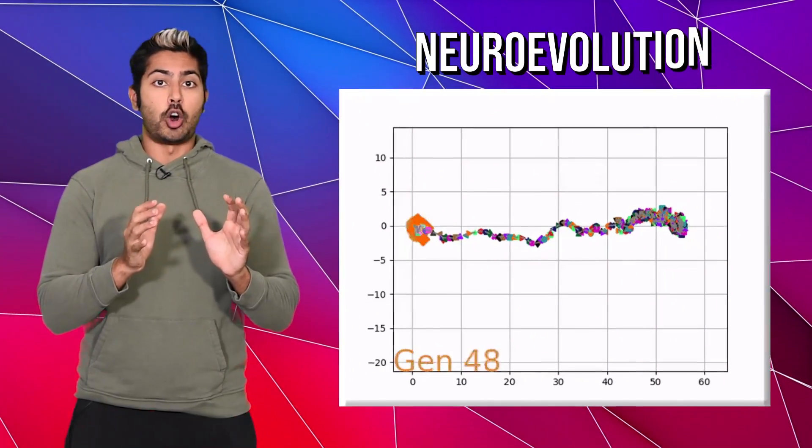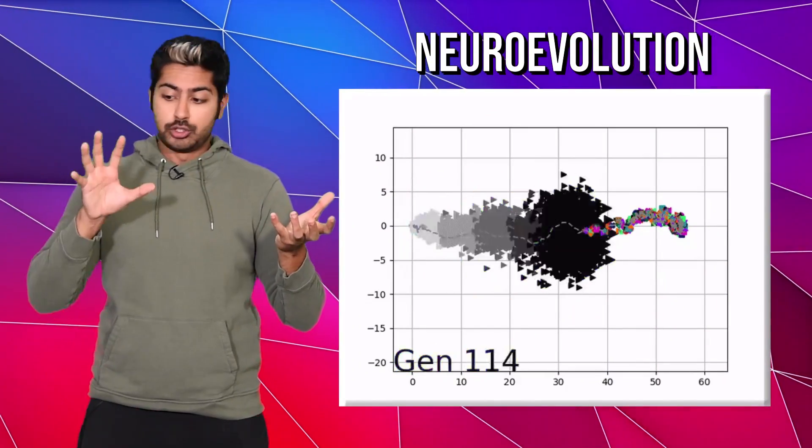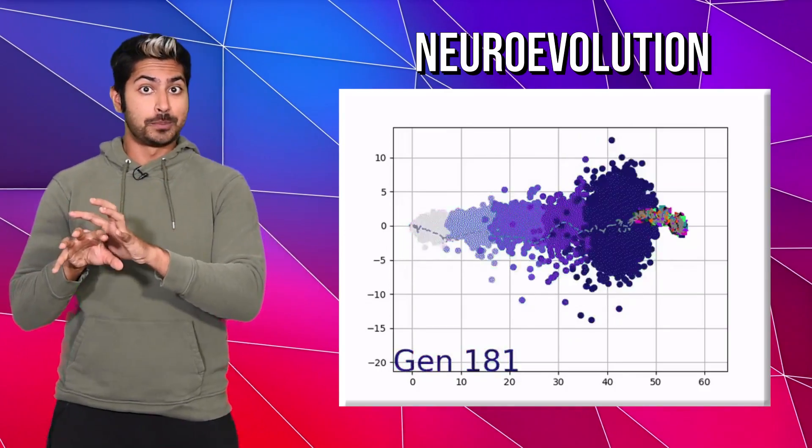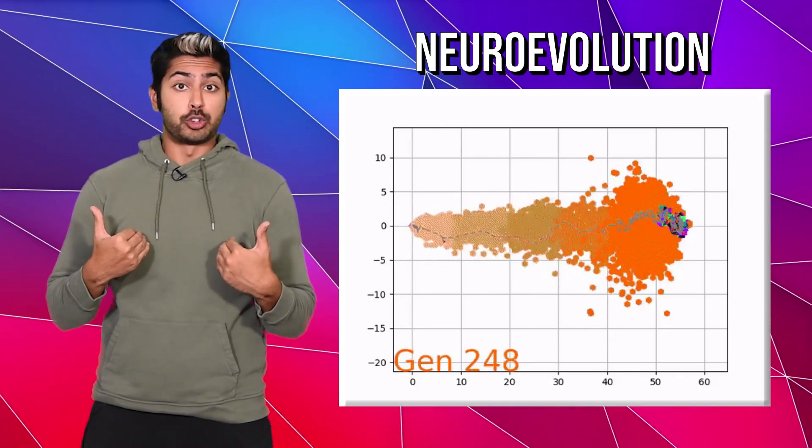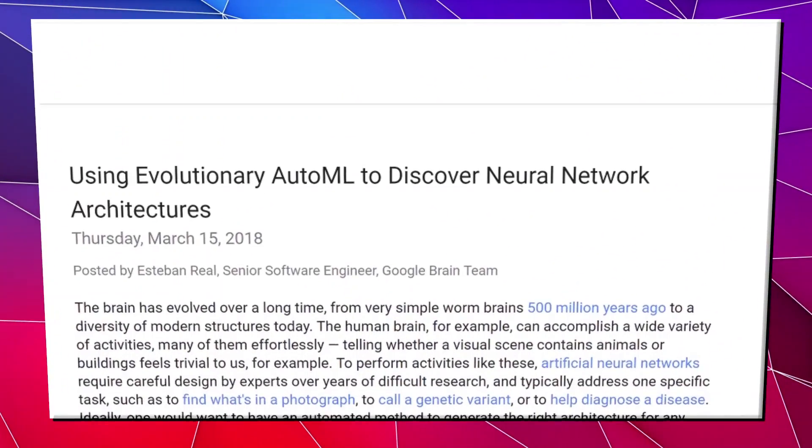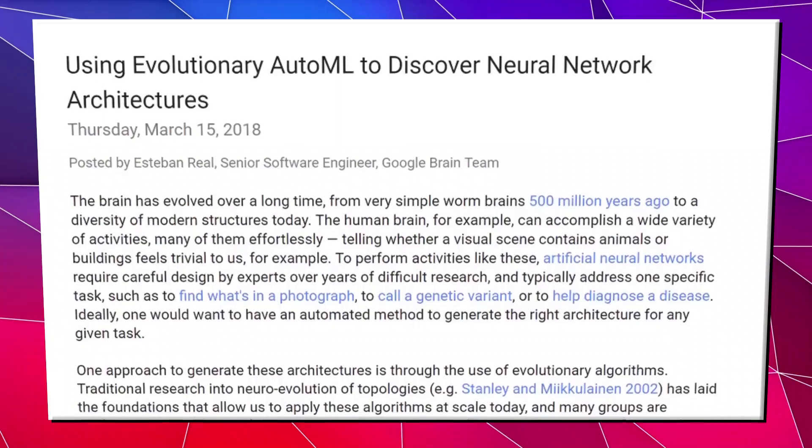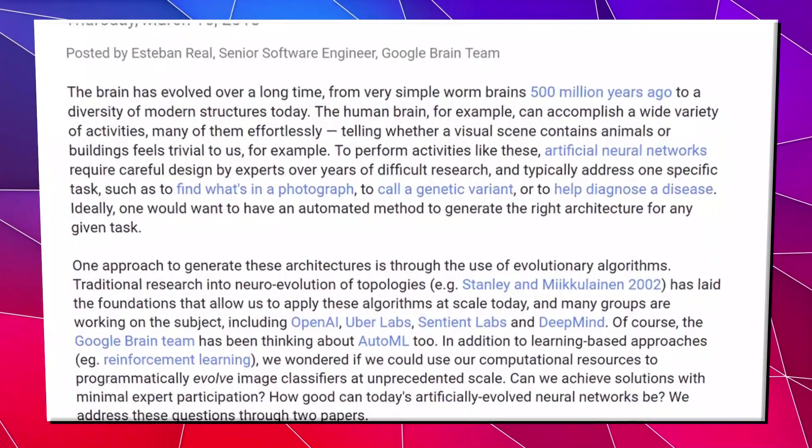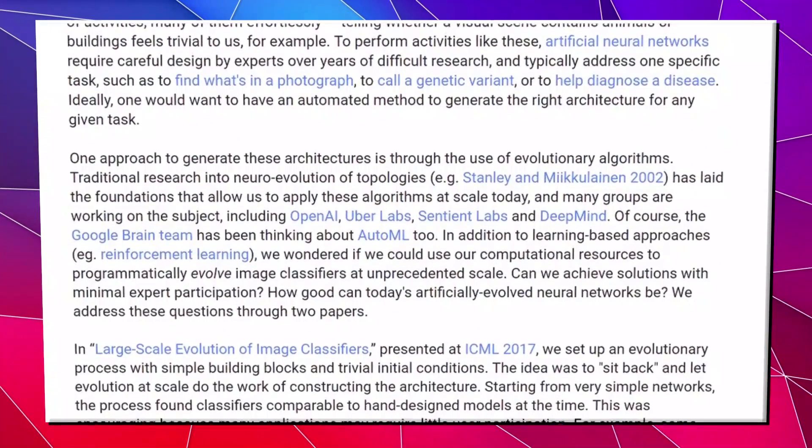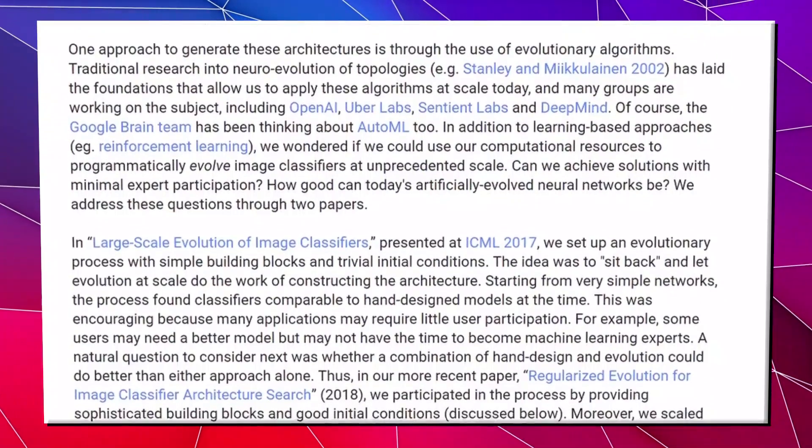This is the process of using an evolutionary algorithm to learn neural architectures. The reason this technique piqued my interest is because just this year, Google published some research detailing their effort at using an evolutionary algorithm to learn the architecture of a neural image classifier, and it ended up becoming the state-of-the-art.